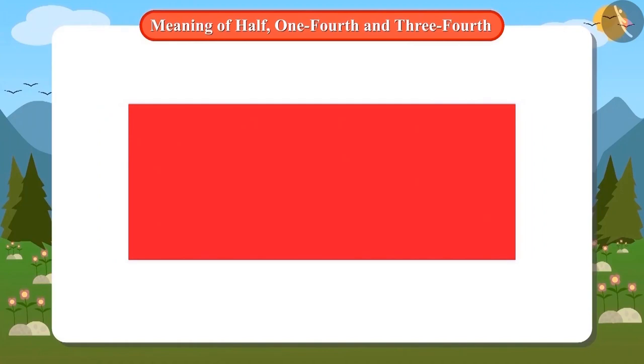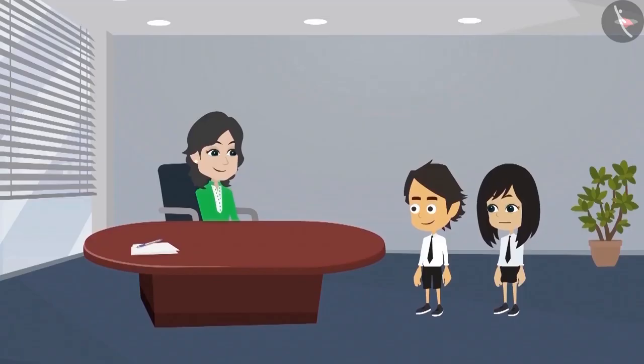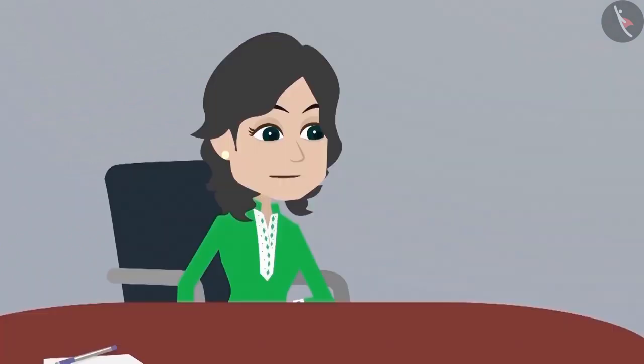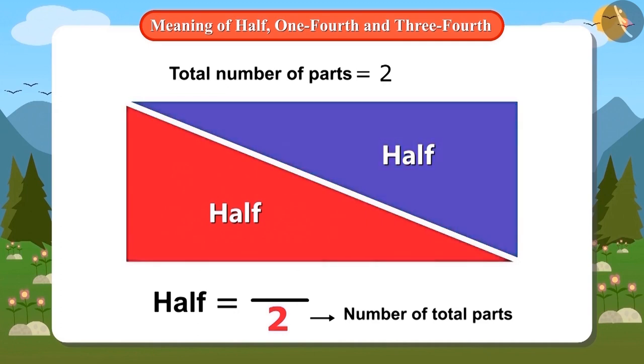Look, this is a rectangle. When it is divided into two equal parts, then one part is called half of this entire shape. Yes, ma'am. But ma'am, how to write it as a number? Very easy. First, we will see how many parts of the whole object are there. There are a total of two parts of this entire rectangle. Yes, and we will draw a line to show it and write two below it.